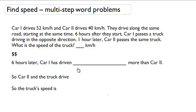So six hours later, we know that car 1 has driven (52 minus 40) times 6 equals 72 kilometers more than car 2.